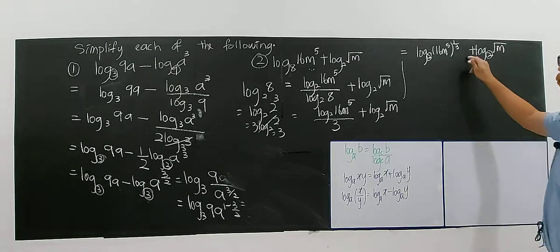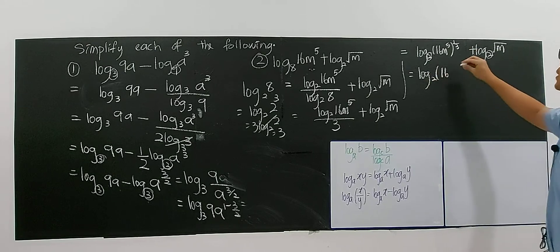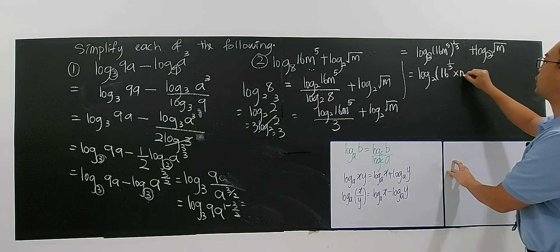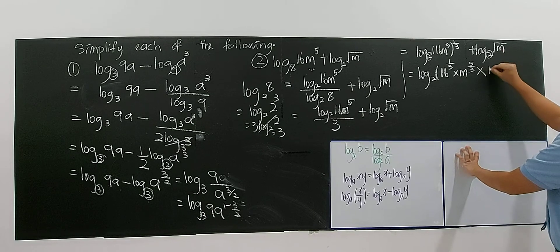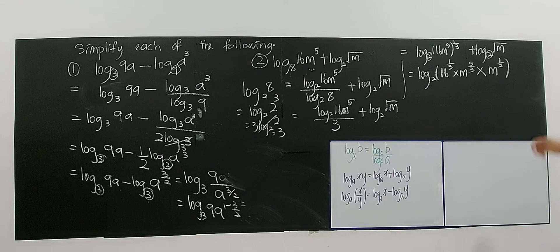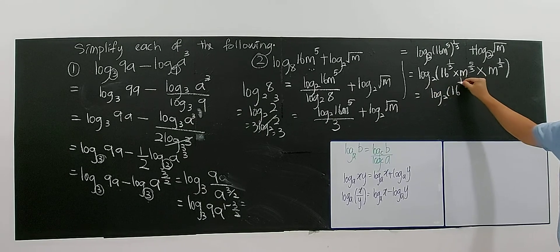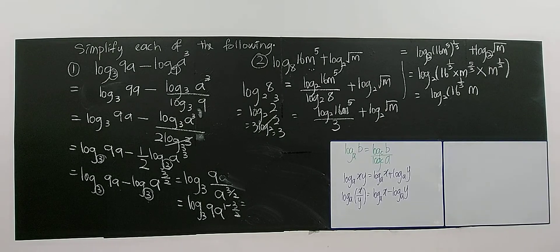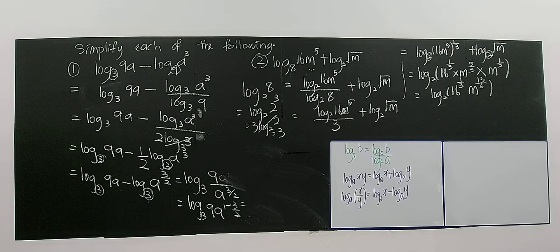So you can apply the addition rule: plus means multiply. Log base 2 of 16^(1/3) times M^(5/3) times M^(1/2). Now I can simplify this. Log base 2 of 16^(1/3), and M has the same base so the powers add up: 5 over 3 plus 1 over 2 gives 13 over 6. So you get log base 2 of 16^(1/3) times M^(13/6).